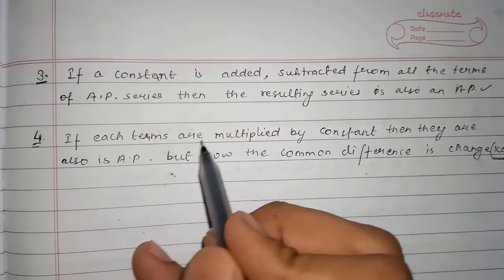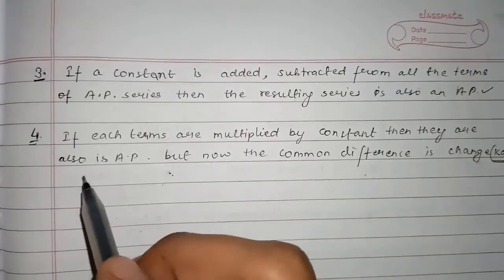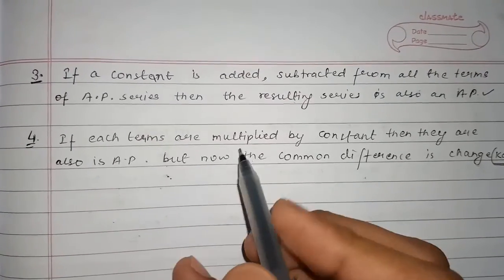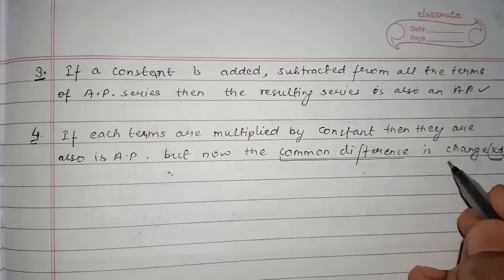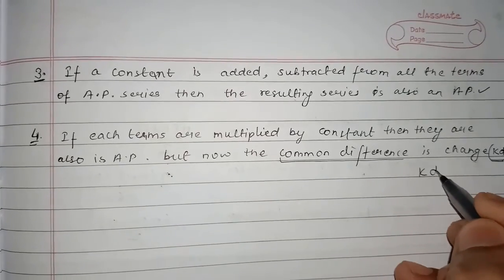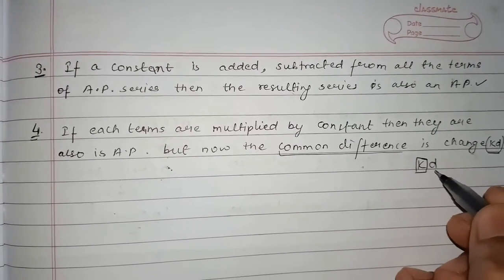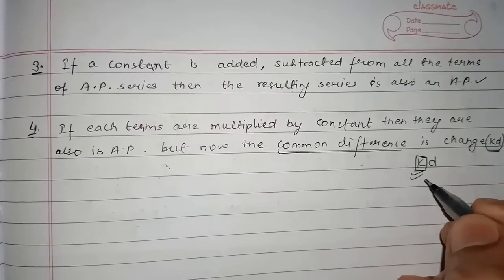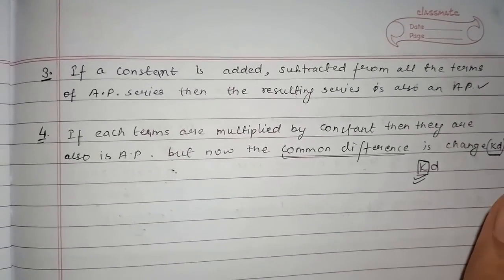And fourth number rule is: if each term is multiplied by a constant, then they are also in AP, but now the common difference is changed. The new common difference is kd if we multiply the whole AP terms with k. I hope you understand the basic properties of the AP.